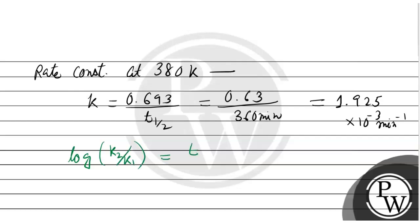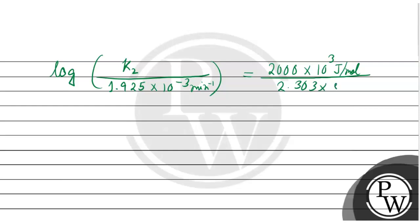From the Arrhenius equation, it is E divided by 2.303 R into 1 by T1 minus 1 by T2. So we can write log of K2 divided by 1.925 into 10 raised to the power minus 3 per minute. This answer is E divided by 2.303 into 8.314.